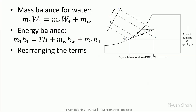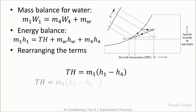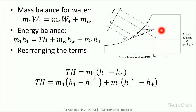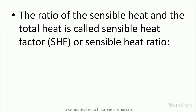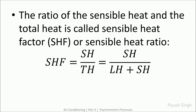Rearranging these terms, the total enthalpy drop equals M1 into (H1 minus H4). The process from 1 to 1' is dehumidification, whereas 1' to 4 is sensible cooling. So the total heat can be split into two components — sensible heat and latent heat. The ratio of sensible heat to total heat is called the sensible heat factor or sensible heat ratio.